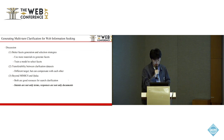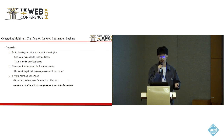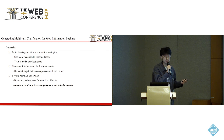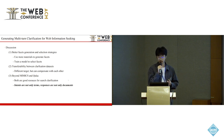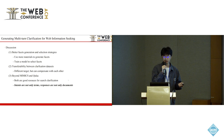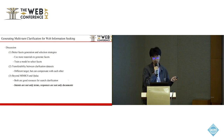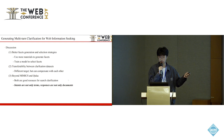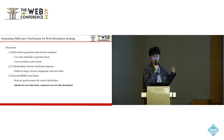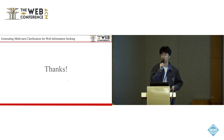In conclusion, our paper proposes two simple yet effective methods — one rule-based and one language model-based. Future directions include better facet generation and selection strategies, such as using more materials or training a dedicated selection model. A second interesting finding is the transferability between clarification datasets: they have different targets but can compensate for each other. Finally, we note that user intents in MIMICS may not always be captured by terms alone, and system responses are not always limited to documents as in QLAC. Thank you very much.